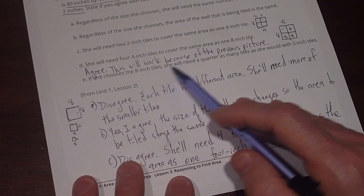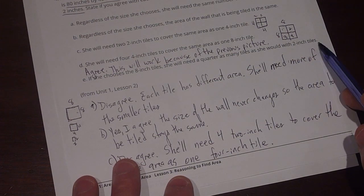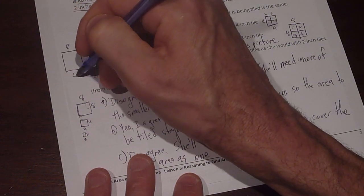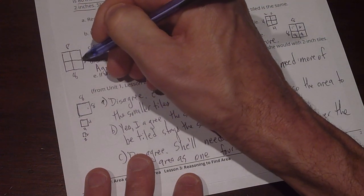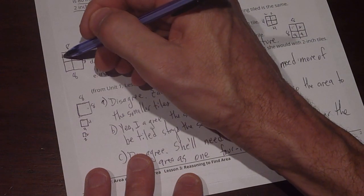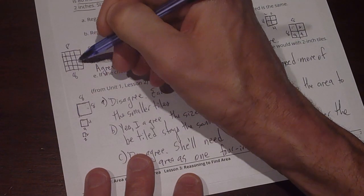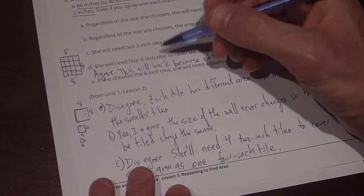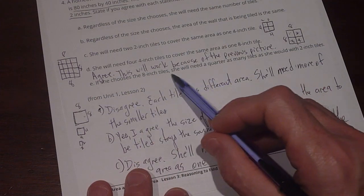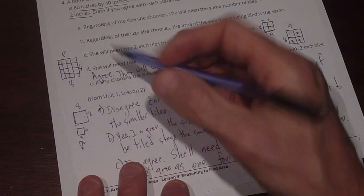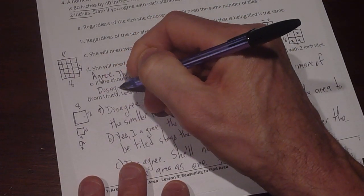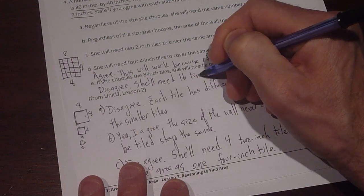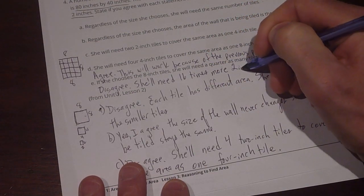And lastly for E, it says if she chooses the 8 inch tiles, she will need a quarter as many tiles as she would with 2 inch tiles. Well, if I look at the 8 inch tiles and draw a picture here of the 8s and 8, this is 8. Now I can split that into 4. So I need 1, 2, 3, 4 times as many for that. And then I split it up again into 2s. And this is 1, 2, 3, 4 by 1, 2, 3, 4. So there's 16 2 inch tiles here to cover the same amount of space as one 8 inch tile. So she will need a quarter? No, that's 4 times less. And here it's 16 times less. So I disagree. She'll need 16 times more 2 inch tiles.